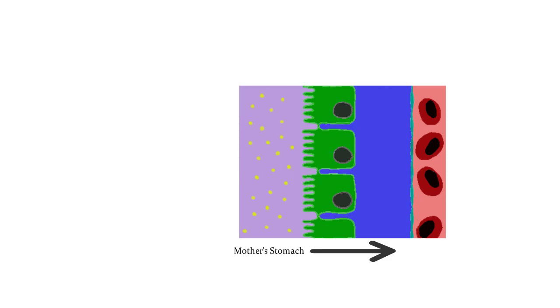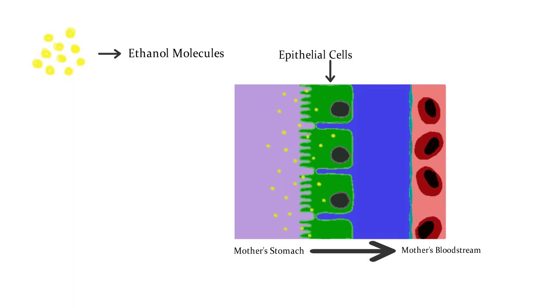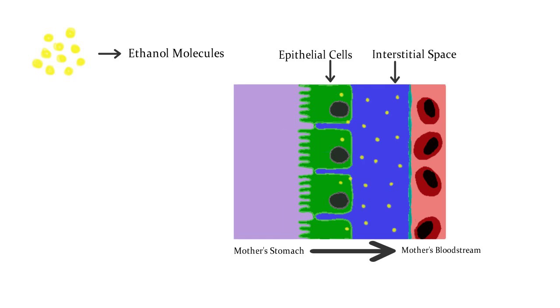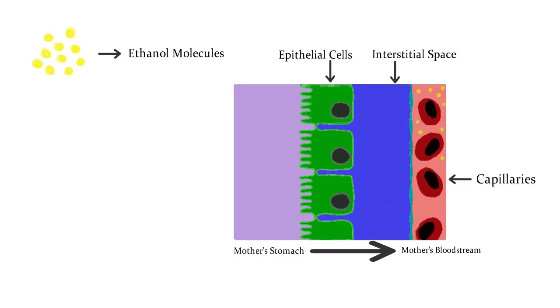So how does alcohol get to the child? When a mother consumes alcohol, it travels from her stomach to the bloodstream. The ethanol molecules in the alcohol are polar and small, which means that they can cross membrane barriers. These molecules diffuse across the epithelial lining of the stomach, across the interstitial space, and into the blood capillaries.